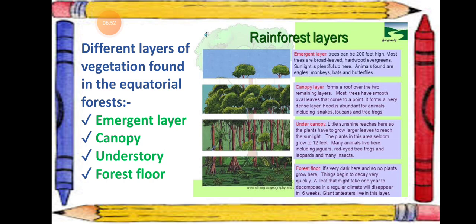The second layer is the canopy layer. This forms a roof-like structure over the two layers below it — the under canopy and the forest floor. The canopy is a very dense layer with very low sunlight. Food is abundant for animals here. Animals found in the canopy layer include snakes, toucans — which is a bird — and red-eyed tree frogs.